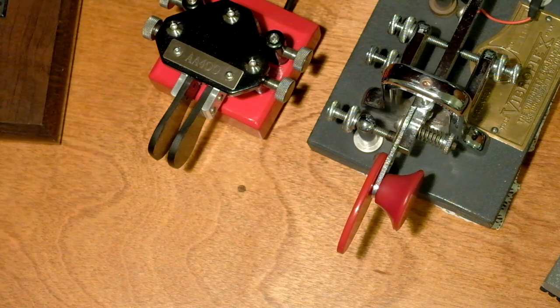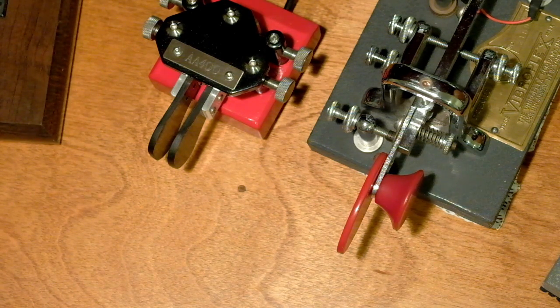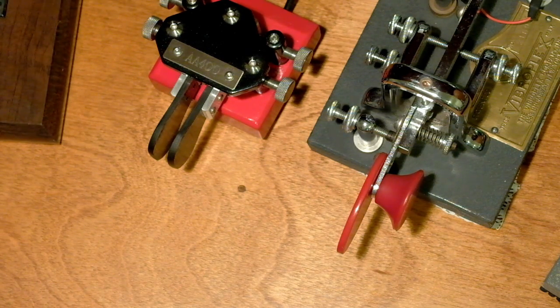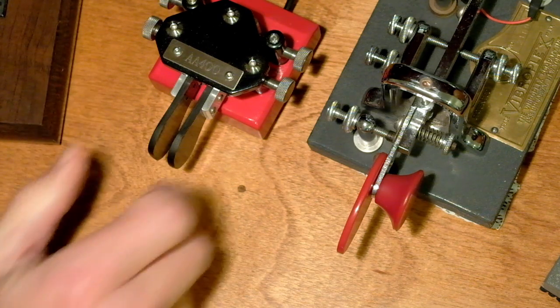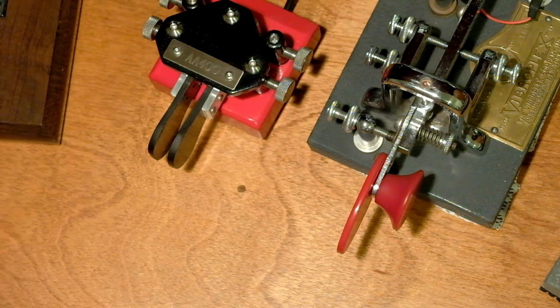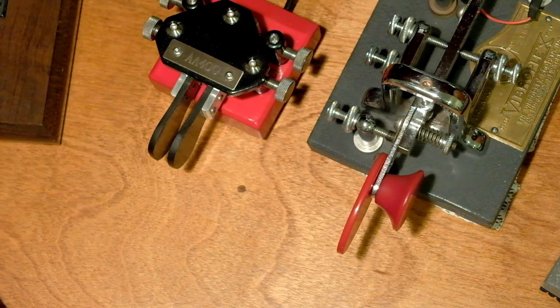So that in essence is the difference between mode A and mode B in iambic keying. You can use a dual lever paddle and if you don't squeeze key, the modes make no difference.